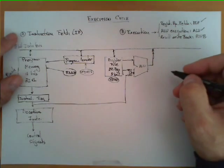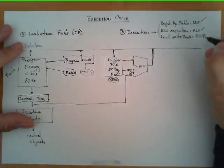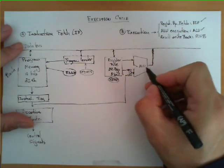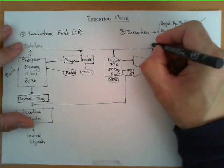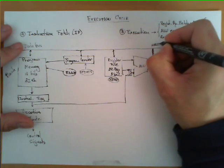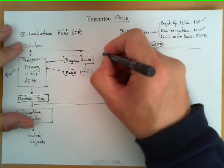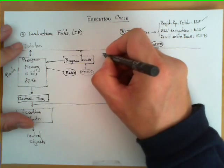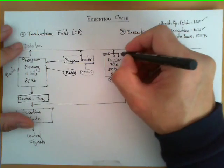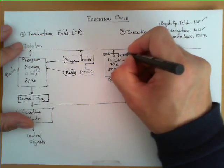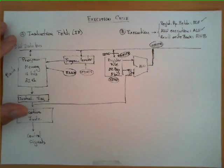Finally, in the third sub-stage — result write-back — what happens is that the result produced by the ALU is written on the bus and at the same time is read by the register file from the bus and written as the result in another register.